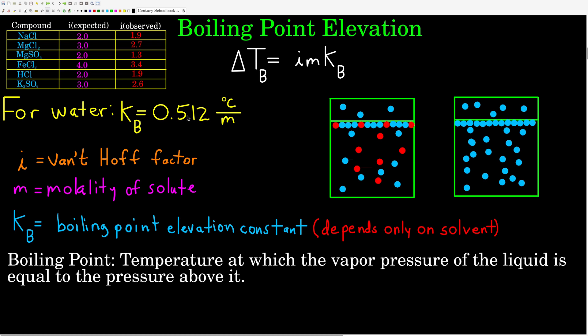First we'll talk about boiling point elevation. This follows directly from Raoult's Law. By adding a solute to a solvent, we lower its vapor pressure. Now if we remember that the boiling point is the temperature at which the vapor pressure of the liquid is equal to the pressure above it, if by adding a solute we decrease the vapor pressure, we have to increase the temperature for it to equal the pressure above it — and so we've increased its boiling point.